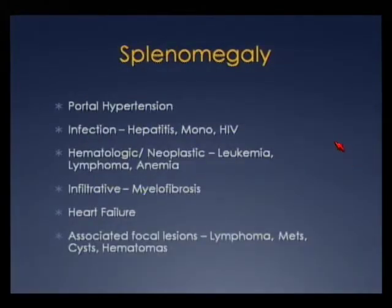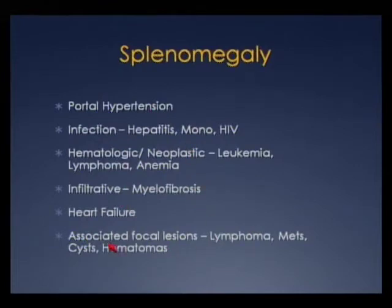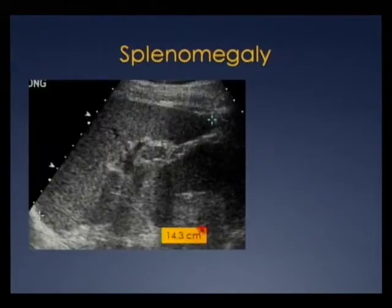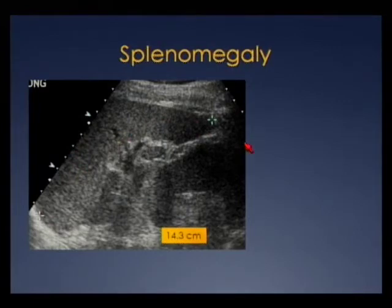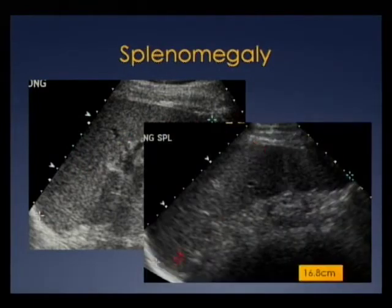Splenomegaly has many causes — most commonly portal hypertension, but also infection, hematologic malignancies, and infiltrative processes. You may also have splenomegaly with focal lesions in patients with lymphoma or metastases. Here's a patient with portal hypertension and a 14-centimeter spleen maintaining smooth homogeneous echogenicity. Another patient with portal hypertension has an enlarged spleen maintaining its crescent shape and homogeneous echogenicity.